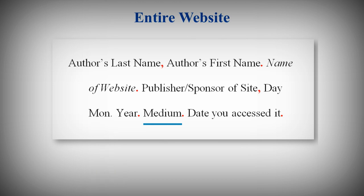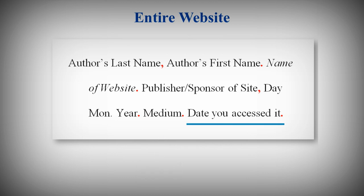Then enter the medium of publication. Medium refers to the format — Web is how MLA refers to any online source or website. Finally, indicate the date you accessed it. The format is also day, abbreviated month, and year. The MLA Handbook says to not include a URL or web address unless your instructor specifically requests you include them.